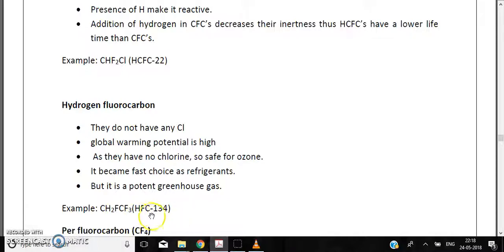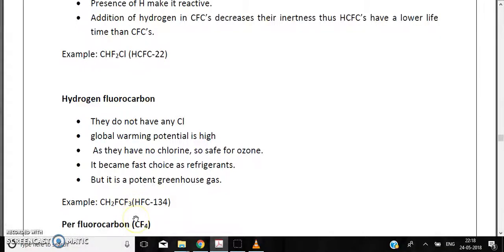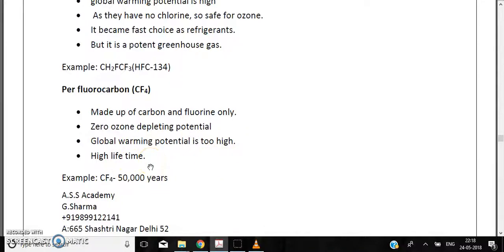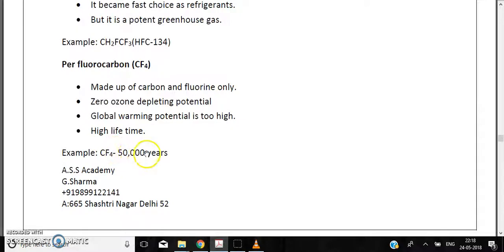Perfluorocarbons are basically made up of carbon and fluorine only. They have zero ozone-depleting potential, but global warming potential is too high and they have a high half-life. This can be seen from the global climate change chapter from Gilbert Masters, which shows the global warming potential of different chlorofluorocarbons.